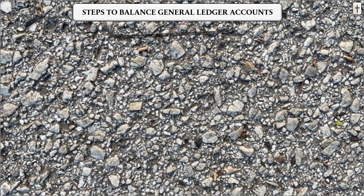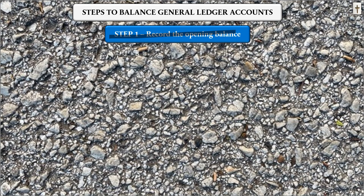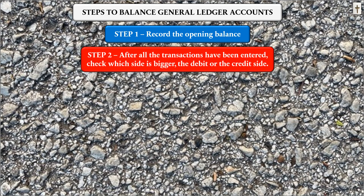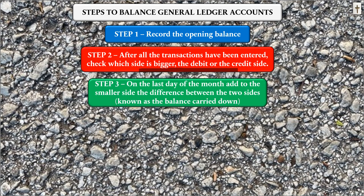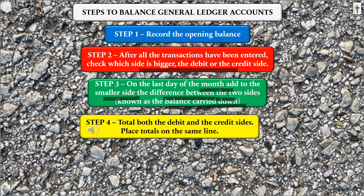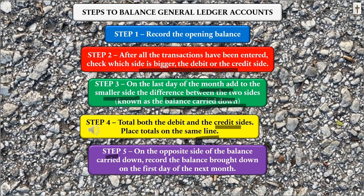So, steps to balance general ledger accounts — balance sheet accounts, B accounts: Step one, record the opening balance. Step two, after all transactions have been entered, check which side is bigger. Step three, on the last day of the month add to the smaller side the difference between the two — known as the balance carried down. Step four, total both the debit and credit sides and place the totals on the same line. Step five, on the opposite side of the balance carried down, record the balance brought down on the first day of the next month.